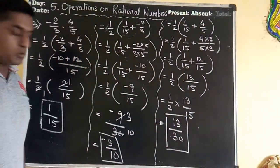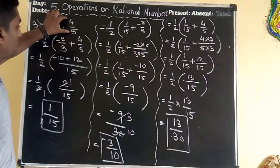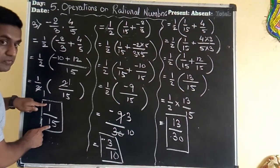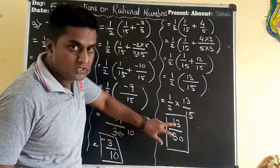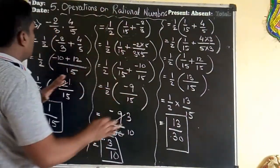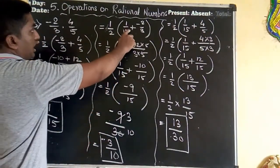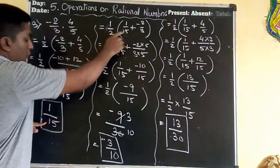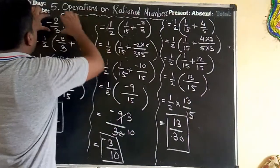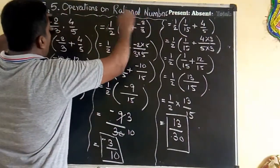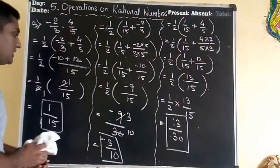So the three rational numbers between minus 2 upon 3 and 4 upon 5 are: first is 1 upon 15, second is minus 3 upon 10, and the third is 13 upon 30. The key method used was: half everywhere, always using 1 upon 15 as the first answer, combined with each of the original given numbers.